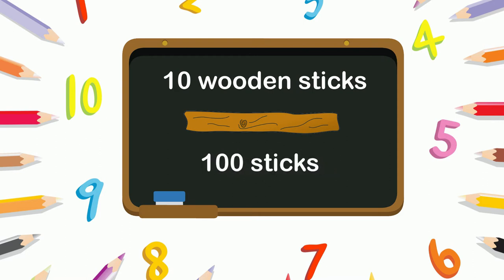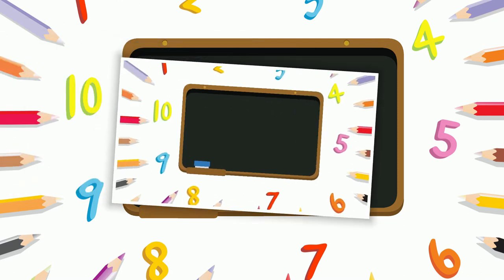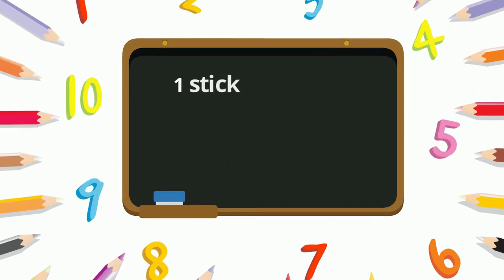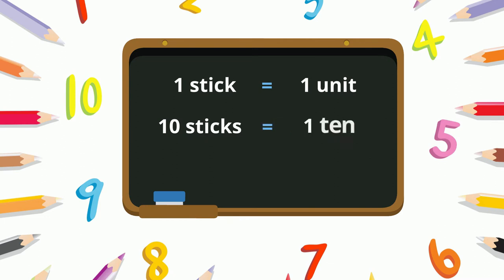Now we will count these bundles and learn some numbers. One stick is equal to one unit. Ten sticks is equal to one ten. Hundred sticks is equal to ten tens, which is equal to one hundred.